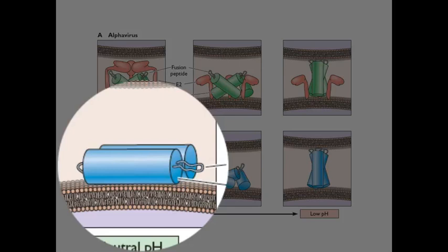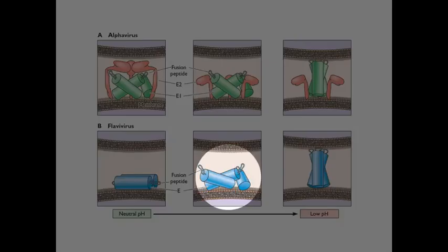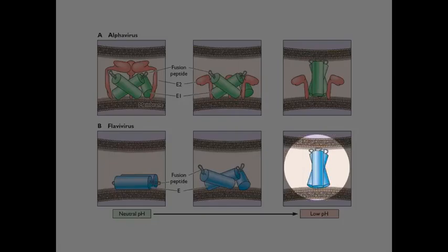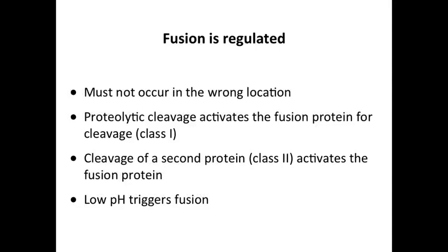And here for the flavivirus fusion proteins, the peptides are hidden close to the membrane. And at low pH, these rise up and insert into the cellular membrane. So very similar mechanisms for all of these fusion peptides. The most important thing, I think, is really to hide the fusion peptides so that it doesn't simply fuse with everything. So fusion is always regulated. It can't occur in the wrong place.